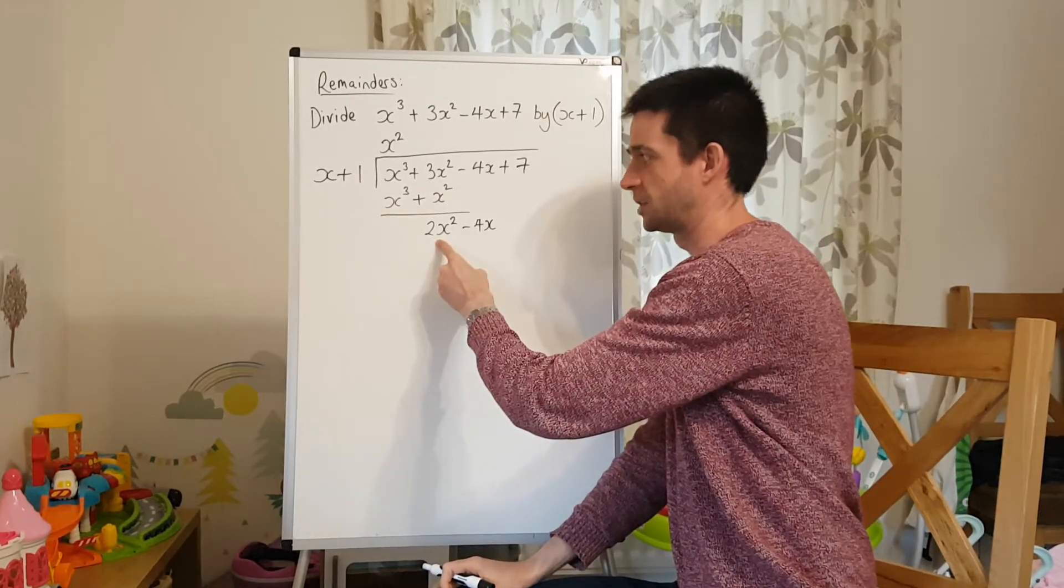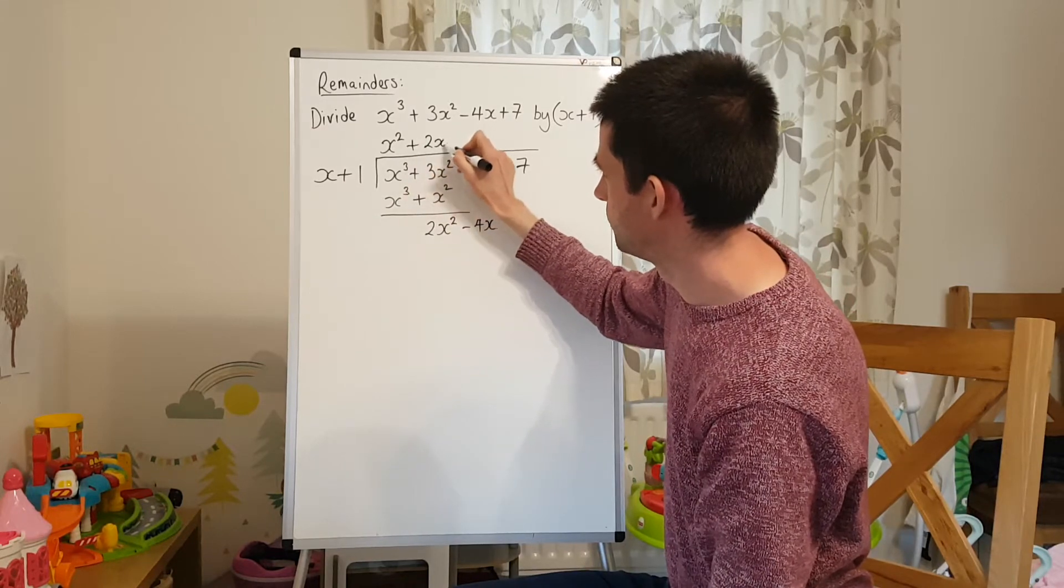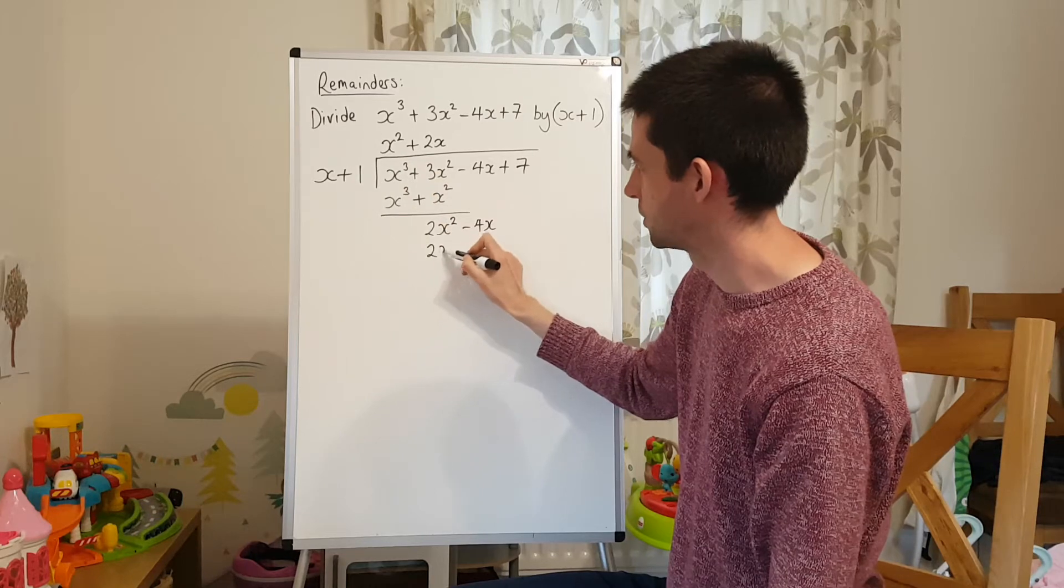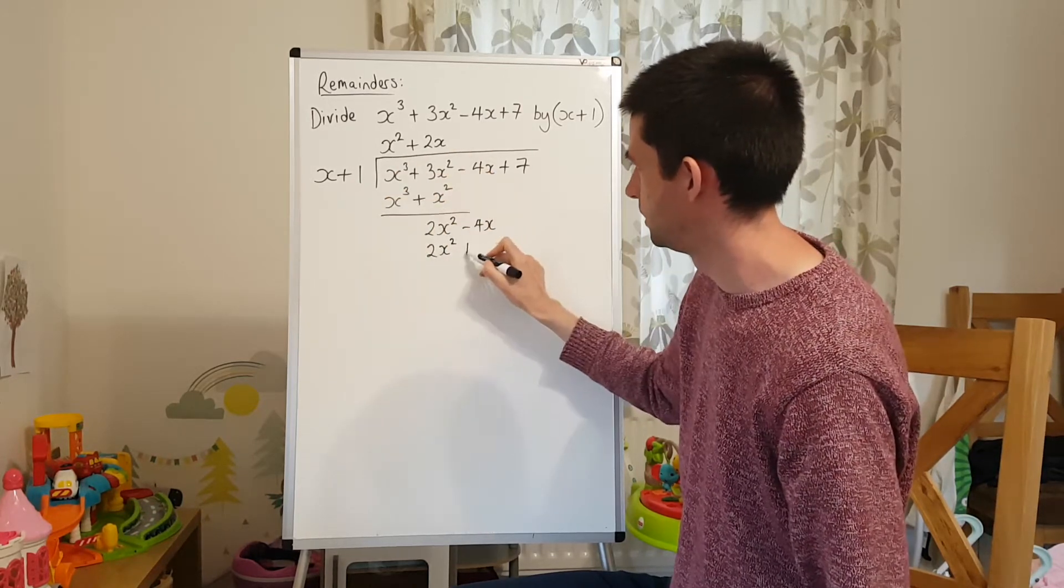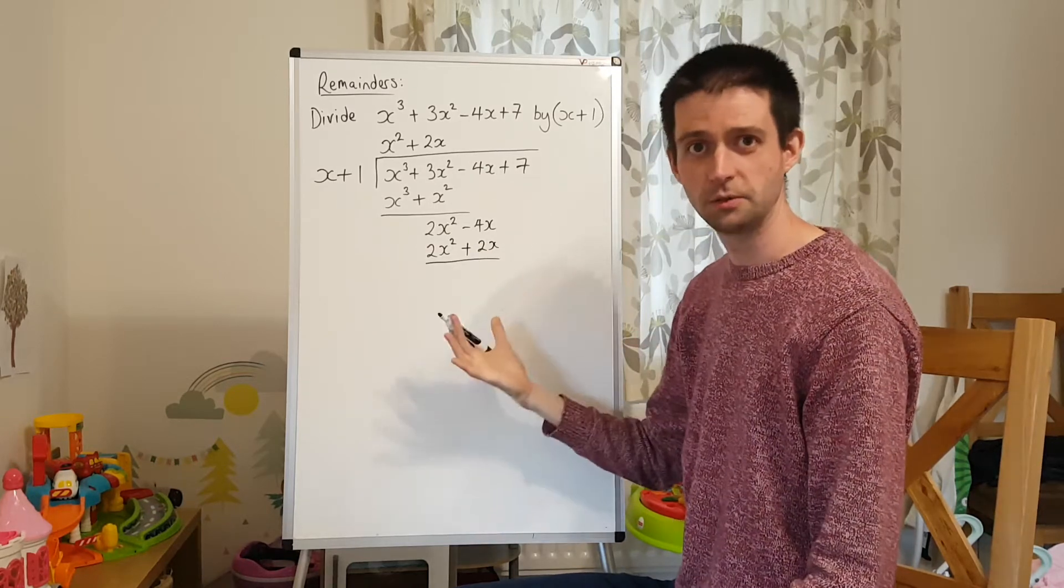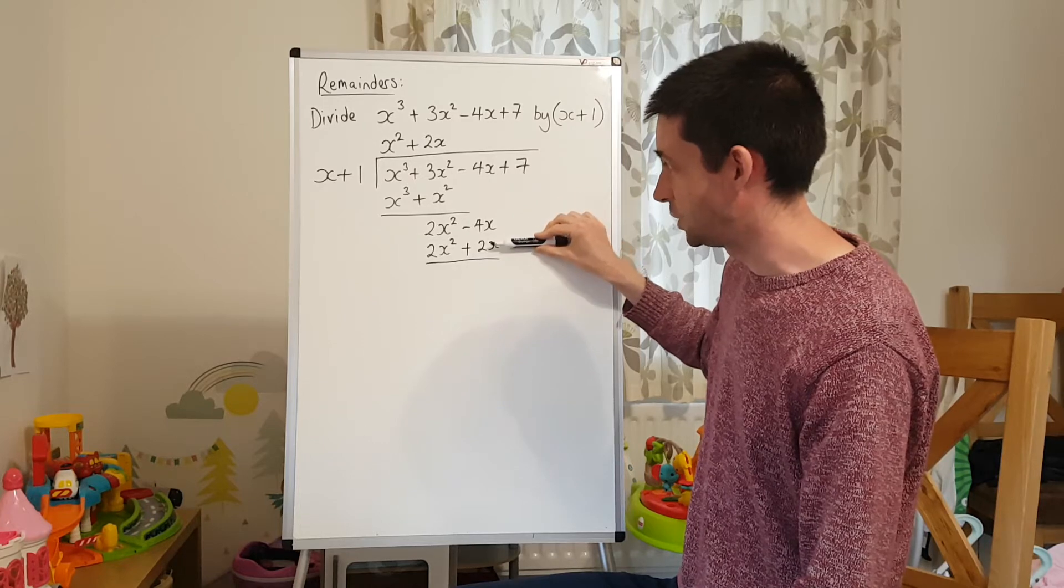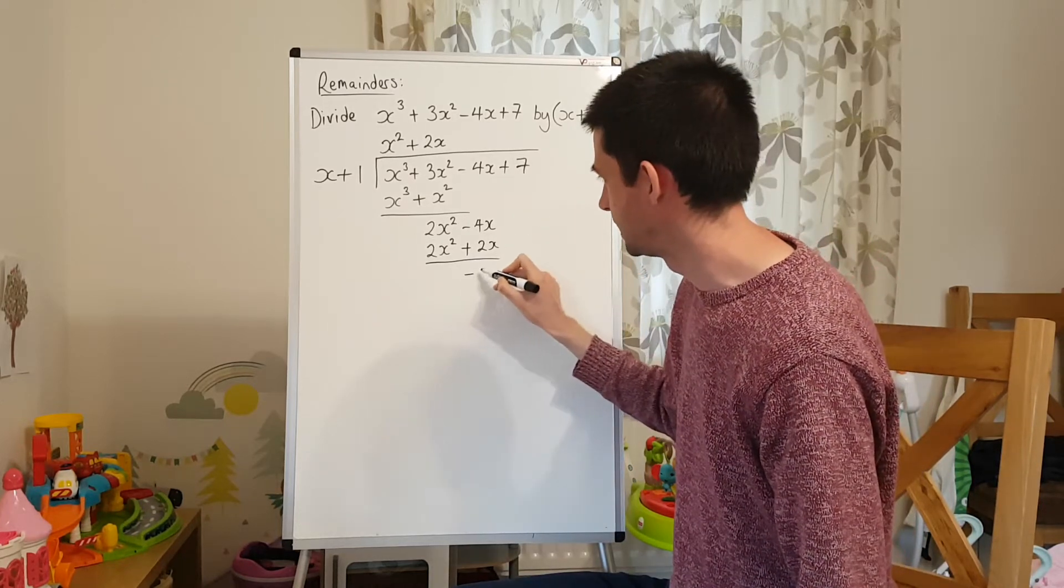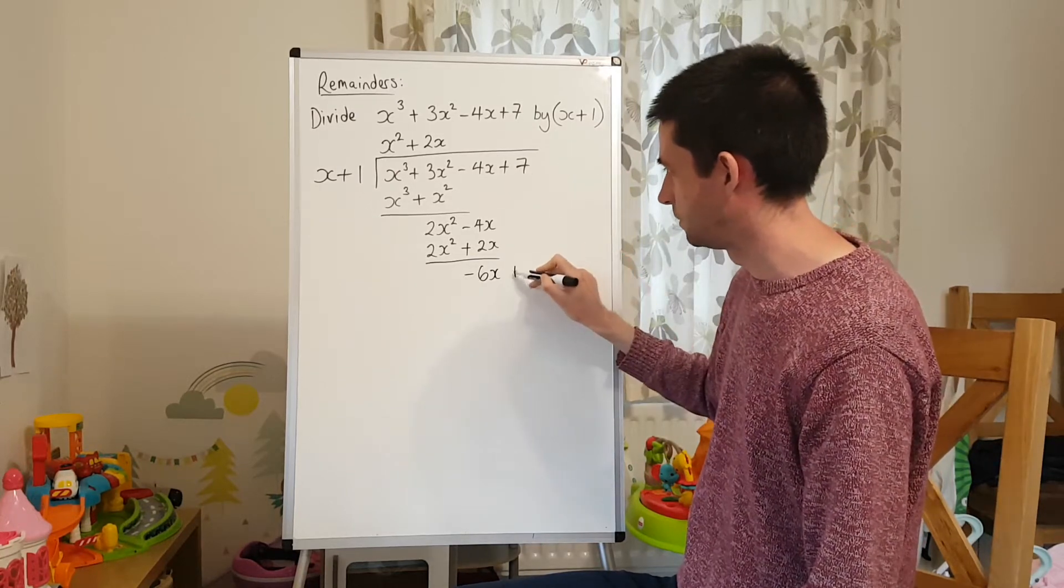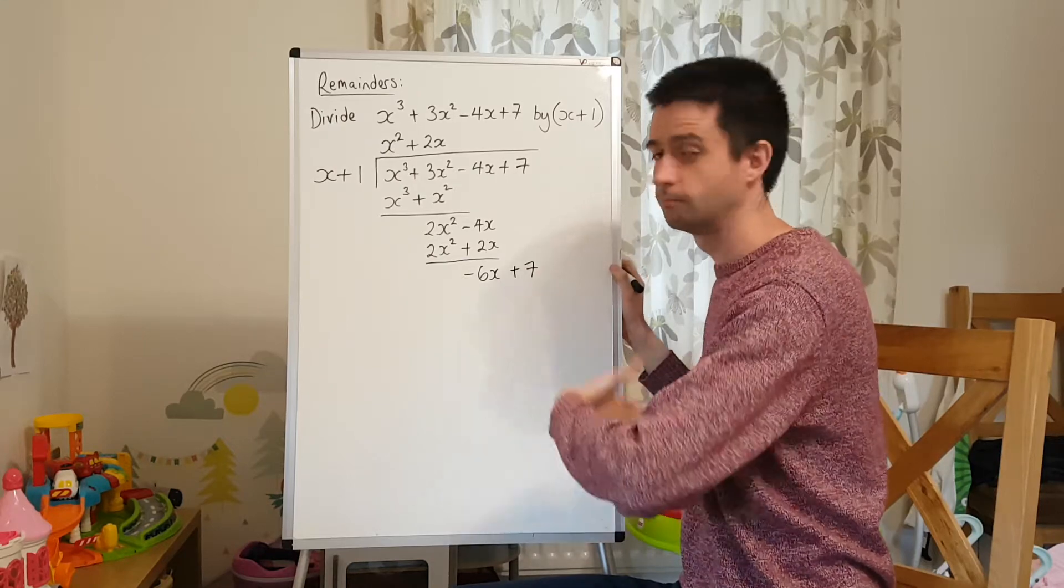How many x's go into 2x squared? 2x. So write plus 2x at the top. And then multiply back. 2x times x is 2x squared. 2x times 1 is plus 2x. Draw in the line to find the remainder. Negative 4x take away 2x is negative 6x, going further into the negatives. Bring the plus 7 down so that I've got two terms for my next stage of division. And repeat.